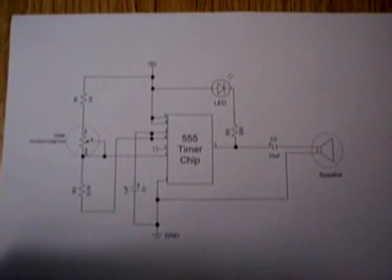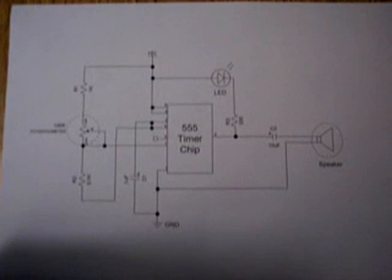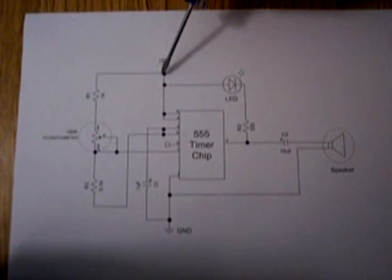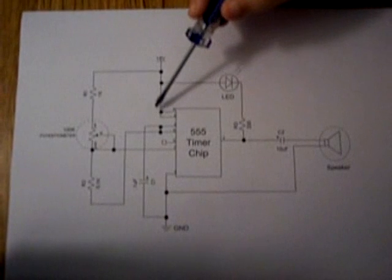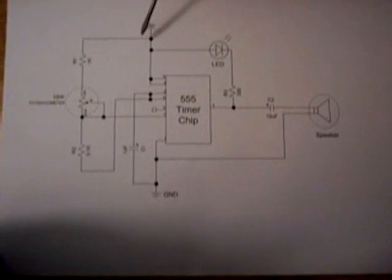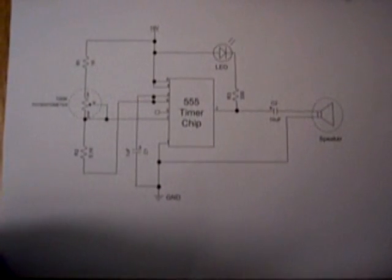Before launching yourself into any circuit building project, it is a good idea to familiarize yourself with the components and the schematic. All of the dark circles on the schematic represent nodes, which is just a fancy name for making a connection between two or more wires.